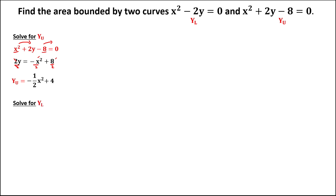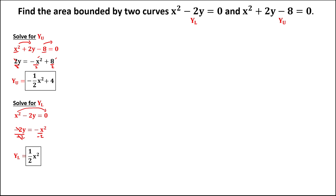To solve for the lower y from x squared minus 2y equals 0: transpose to get negative 2y equals negative x squared, then divide every term by negative 2. The lower y equals positive one-half x squared. We can now substitute these two equations into the formula.